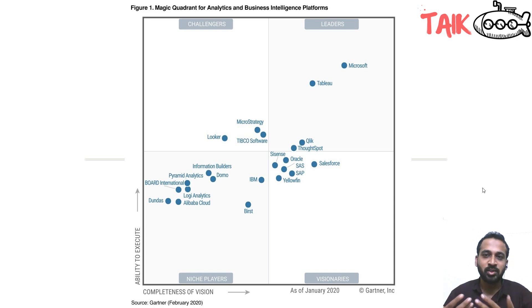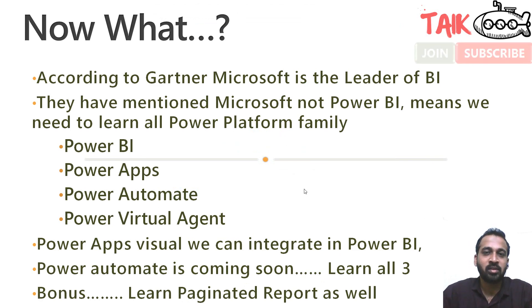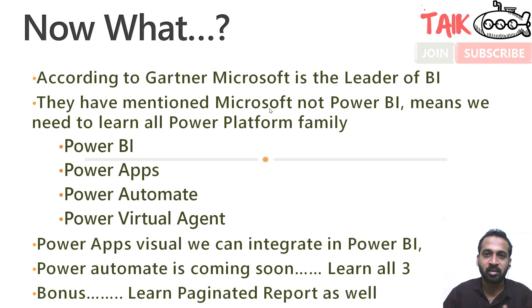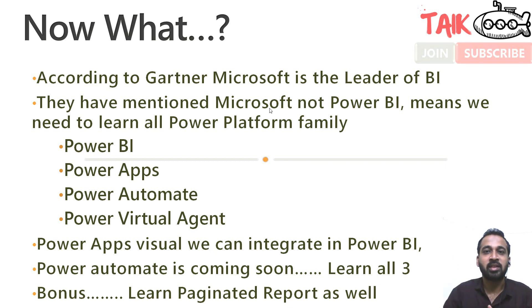Now you might wonder what's going on between these two. Let's first understand this picture. This is the Gartner Magic Quadrant chart for February 2020. As you can see in the business intelligence platform, Microsoft is the leader here. According to Gartner, Microsoft is the leader of BI — they mention Microsoft, not just Power BI. So it's not only Power BI; in the Gartner chart it refers to all of Microsoft, meaning we need to learn the entire Power Platform family — Power BI, Power Apps, Power Automate, and Power Virtual Agent — which together got Microsoft the leader position in the Gartner overview.